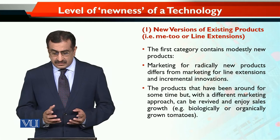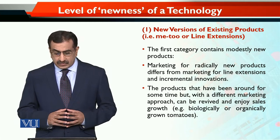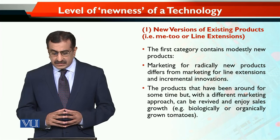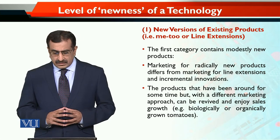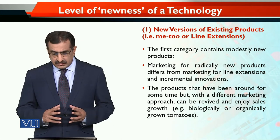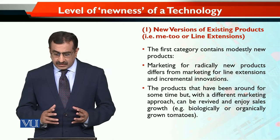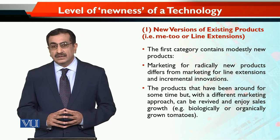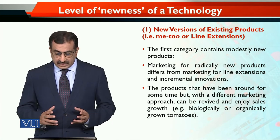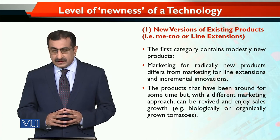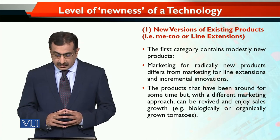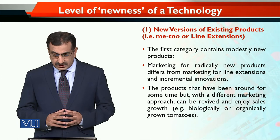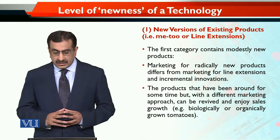New versions of existing products — which are 'me too' or line extensions — this is the first category and it contains modestly new products. Products that have been around for some time but with a different marketing approach can be revived and enjoy sales growth. We talked about biologically or organically grown tomatoes as an example.